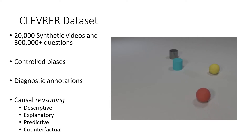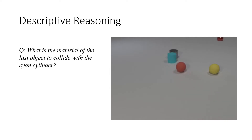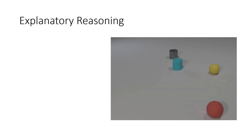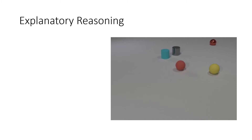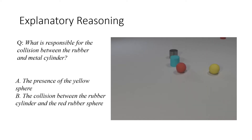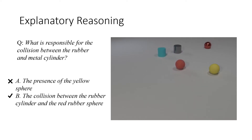Let's take a look at examples from this dataset. The descriptive question asks the agent about the event happening during the video — for example, what is the material of the last object to collide with the cyan cylinder? The answer is metal. For explanatory questions, the model must explain the cause of a specific event. In this example, the collision between the rubber sphere and the cyan cylinder pushes the cylinder to collide with the metal cylinder. We regard the second collision as being caused by the first.